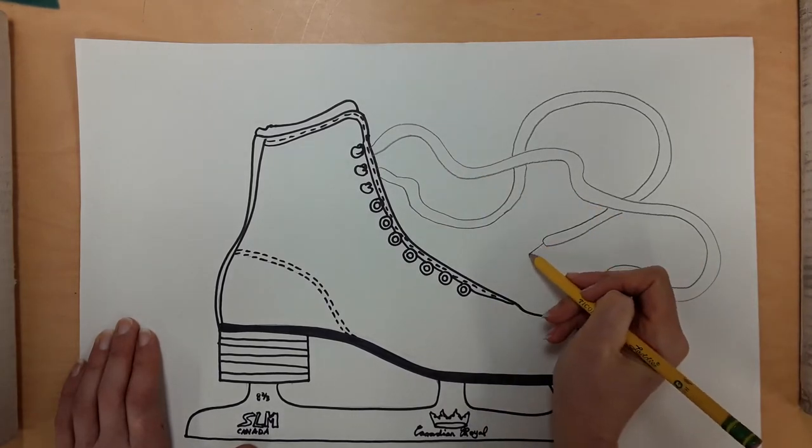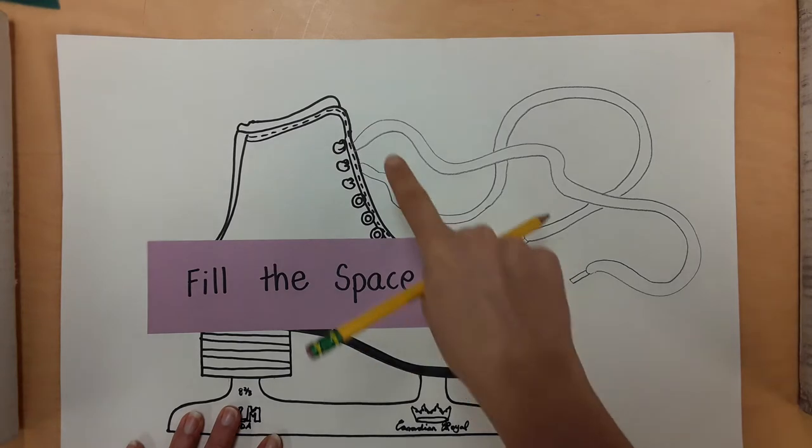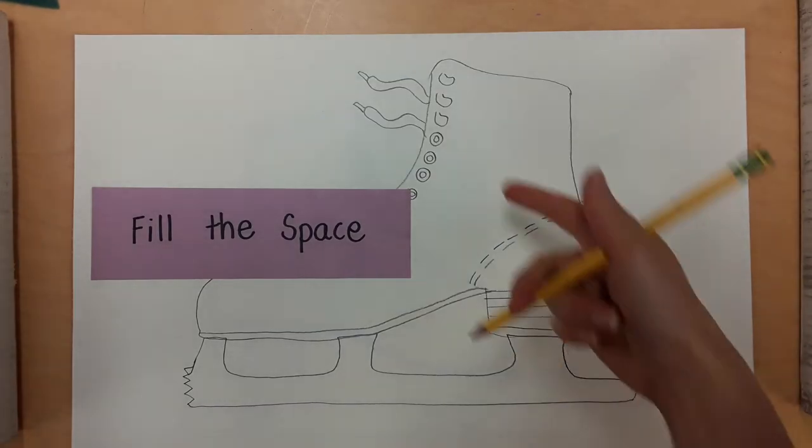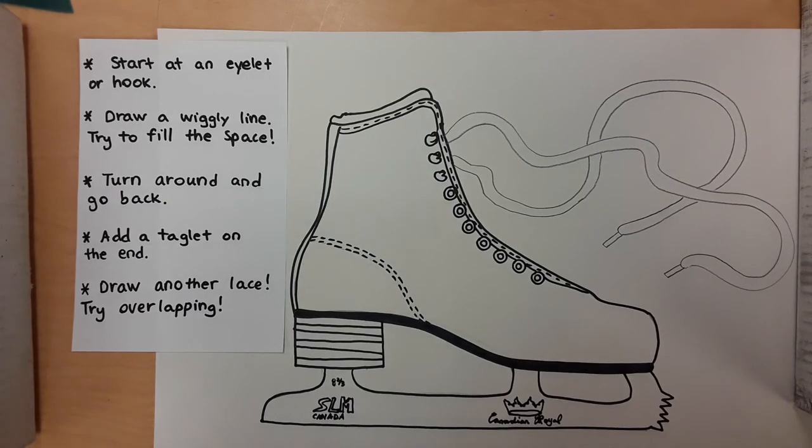And go to the end and draw a taglet. Drawing laces is a great way to fill the space. Don't make your laces too small because that won't fill the space. When you're finished, you can trace with Sharpie.